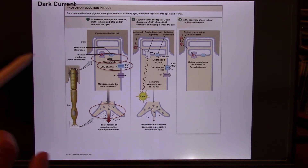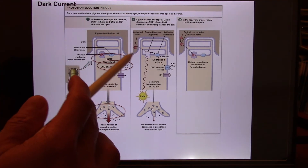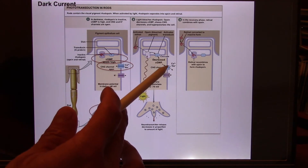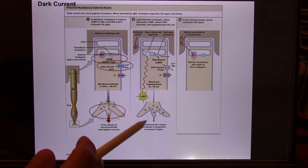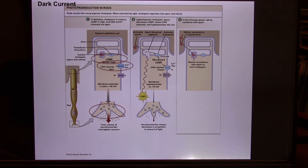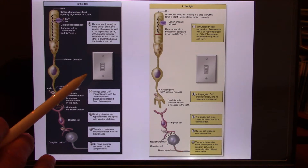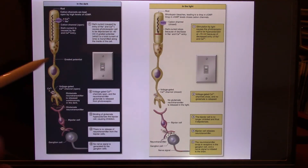When there is light, the light hits the rhodopsin — or the other three photopigments — and it's going to decrease cyclic GMP. When you decrease cyclic GMP, you close the ion channel and hyperpolarize the cell. When it's hyperpolarized, there is no neurotransmitter release. So it's totally reversed — that's the dark current. When there is no light, there is a lot of neurotransmitter. When there is light, there is no neurotransmitter.